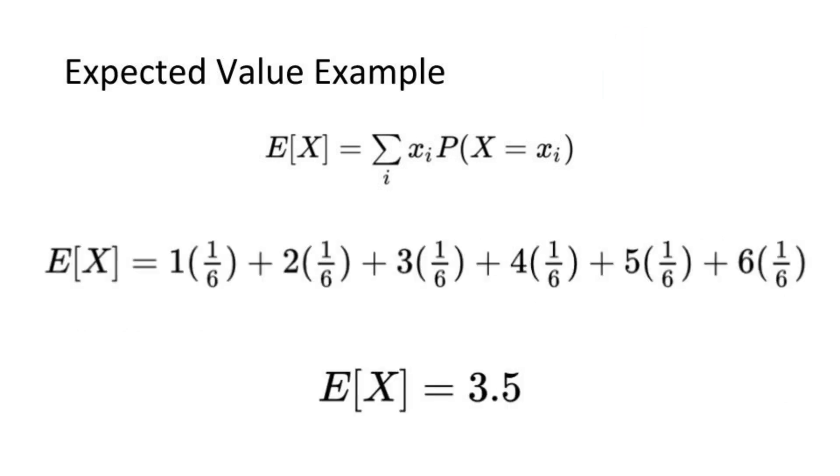Now if you perform a weighted average on all of the possible outcomes, you can find the expected value that you expect to get. Well your expected outcome on the roll of a die is 3.5.